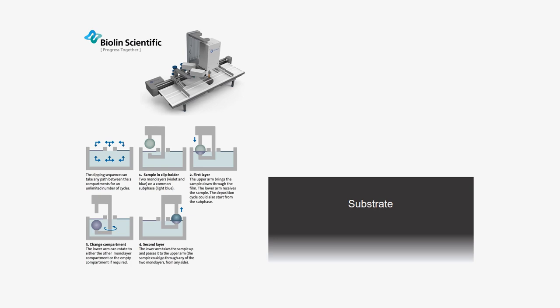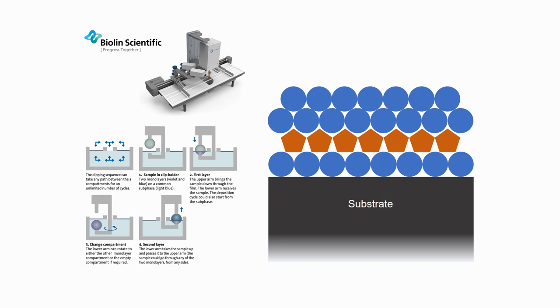The KSV NEMA alternate trough also allows us to build bespoke multilayers in which we vary the nanomaterial on a layer by layer basis.